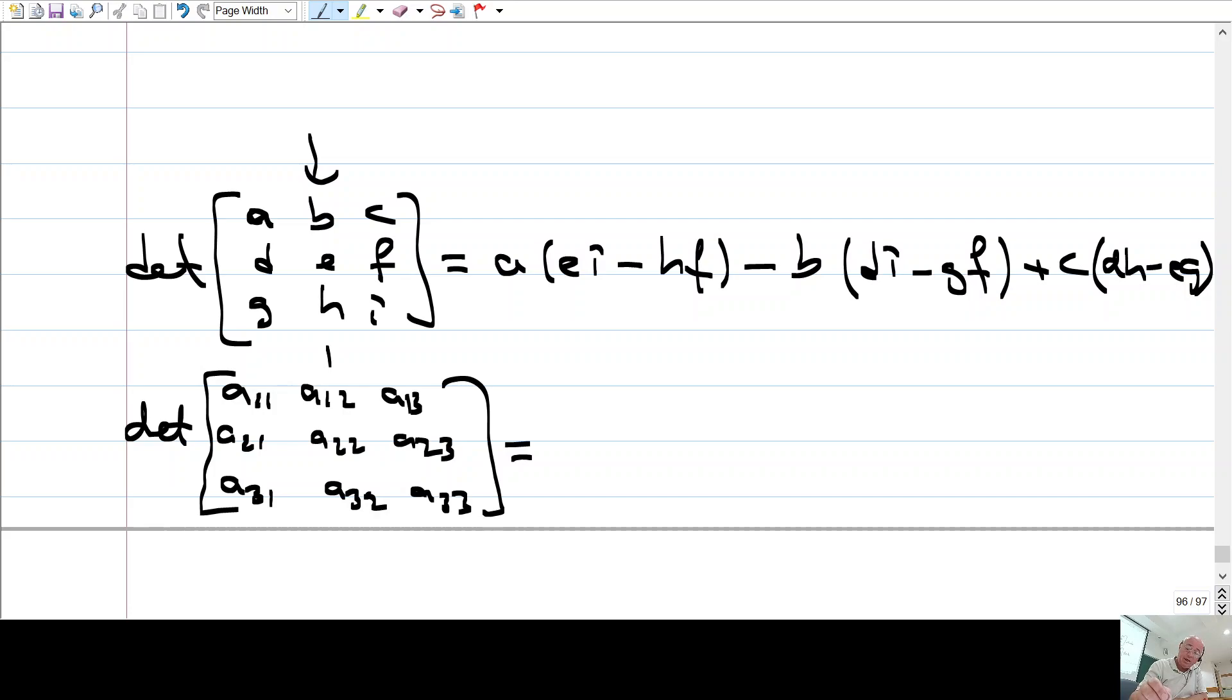Nasıl? Mesela ikinci sütun boyunca yapayım. İlk entry alıyorsun. Ama bunun önüne şunu koyuyorsun. Bunun index'lerinin toplamını. 1-2, A1-2. Ondan sonra bunu ve bunu kapatıyorsun. Geriye kalan determinantı nedir o da? A2-1, A3-3, eksi A2-3, A3-1.